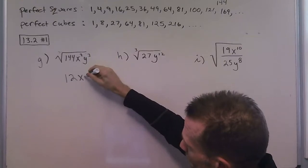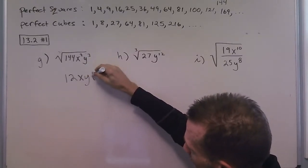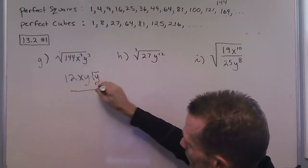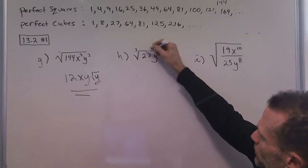Then two goes into three one time, but we have one y left under another radical sign.